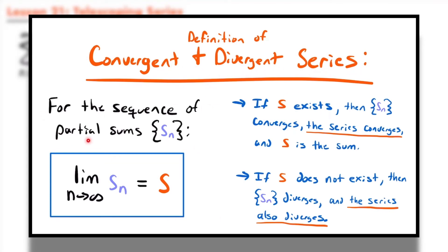If we have a sequence of partial sums s sub n, and the limit as n approaches infinity of the nth partial sum is equal to s, and s exists, then that sequence of partial sums converges, and the series also converges, and s is the sum — the value that the series converges to. If s does not exist, then the sequence of partial sums diverges, and the series also diverges.